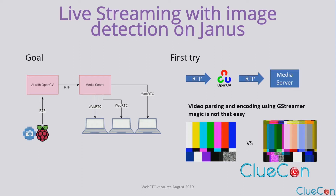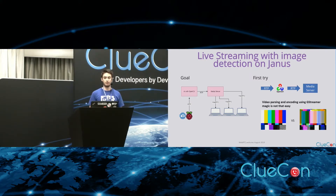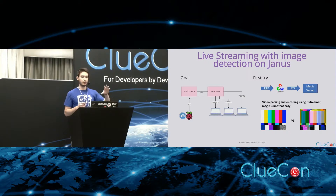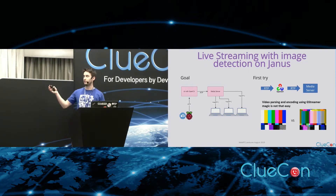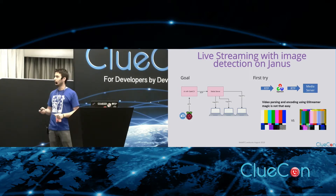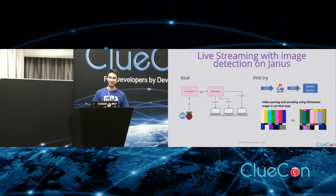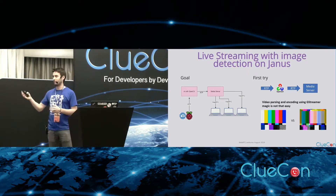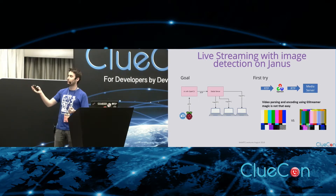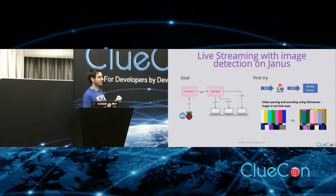Then we have live streaming with image detection in Janus. In this case I took a slightly different approach because it wasn't that easy to get the WebRTC stream, pass it to an AI service, and send it back as WebRTC. So I just get it as an RTP stream from the camera. We thought we might need to create some kind of plugin, but instead we created a service in Node, passed the RTP stream to the Janus RTP plugin, and then Janus was able to handle the live streaming through WebRTC. You need to be very explicit about the format and codecs you're using from one side and the other.